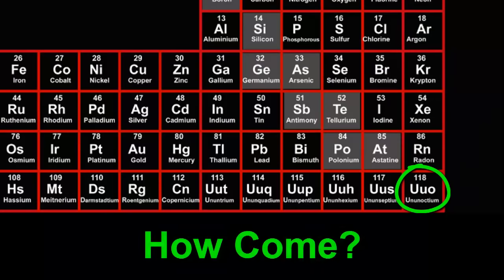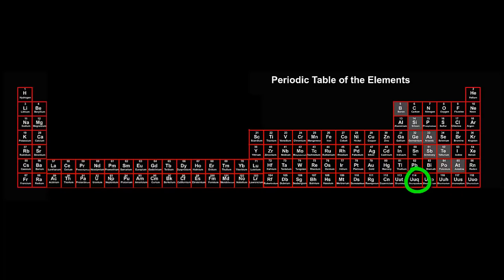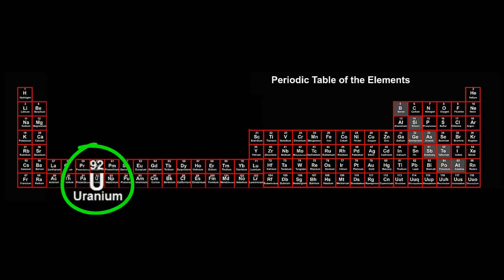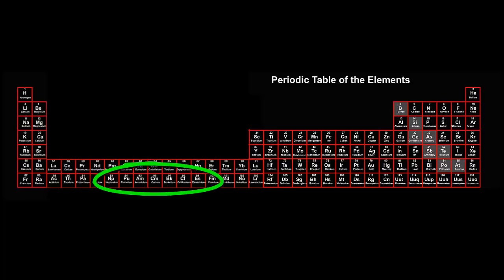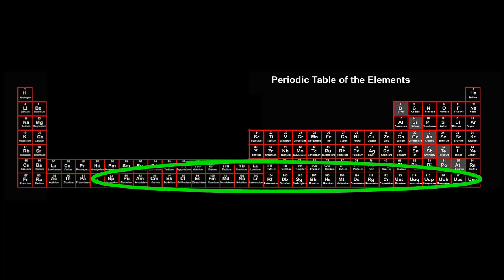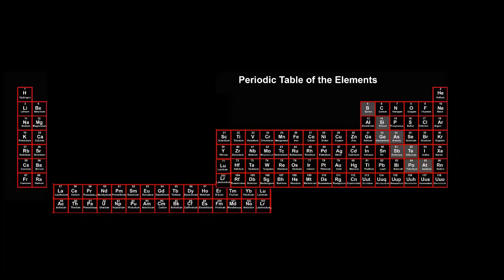How come? Aren't there meant to be only 92 elements, with uranium being the last one? Yes, but clever scientists have made artificial elements in the lab, like neptunium and plutonium, the elements next door, that were made in 1940. These new elements make the overall list of elements a bit longer. Let's collapse the periodic table back to its usual shape, which is more convenient for fitting onto the screen.